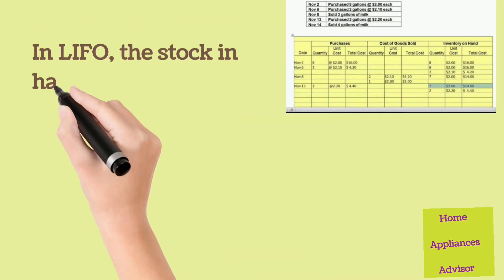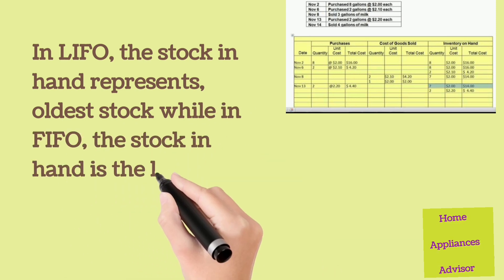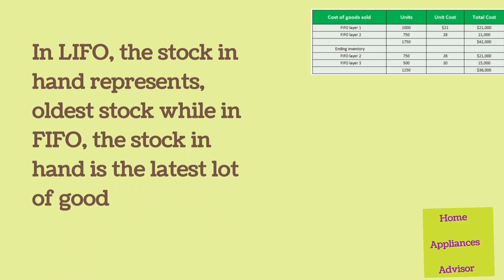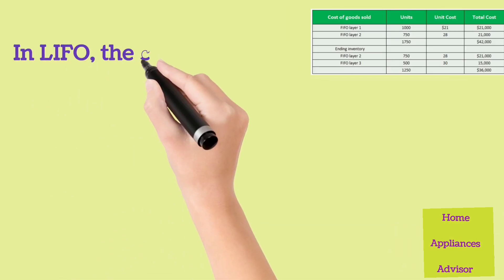In LIFO, the stock in hand represents the oldest stock, while in FIFO, the stock in hand is the latest lot of goods.